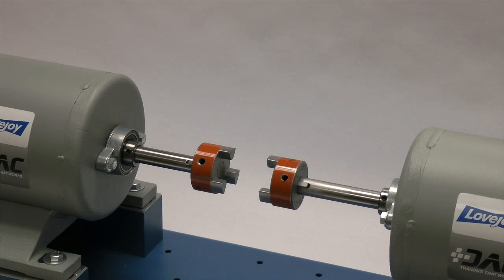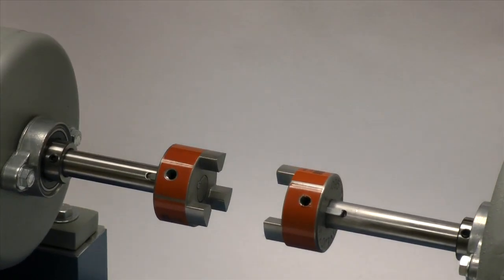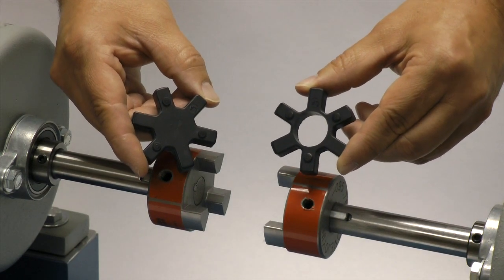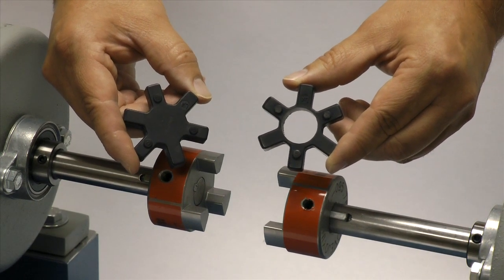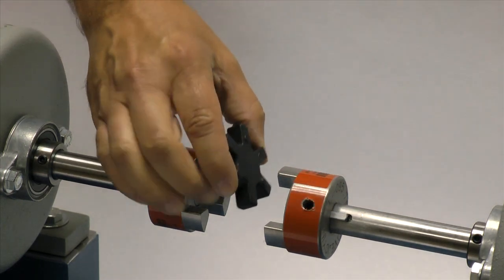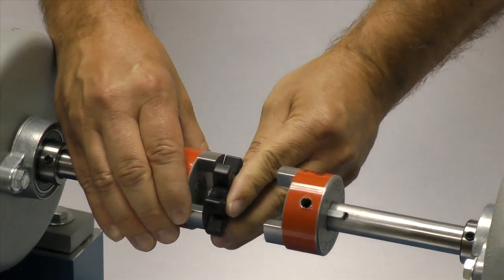Next, we will insert the spider into one of the jaw coupling hubs. If the final shaft separation is going to be less than the actual width of the spider, you may need to use an open center spider. Please remember that open center spiders are limited to 1800 rpm. For our installation, we will be using a closed center spider.